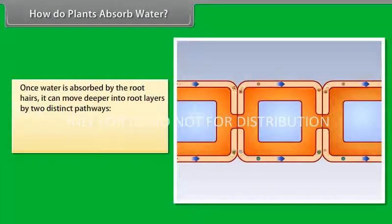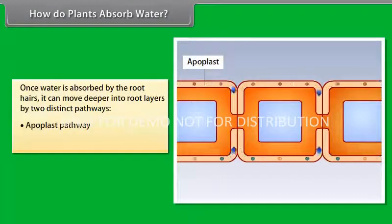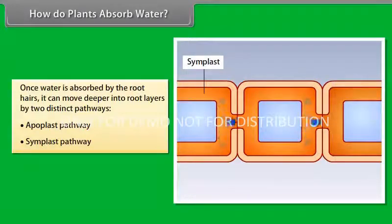Water is absorbed along with mineral solutes by the root hairs purely by diffusion. Once water is absorbed by the root hairs, it can move deeper into root layers by two distinct pathways: Apoplast pathway and Symplast pathway. We will know them in detail in the next few screens.